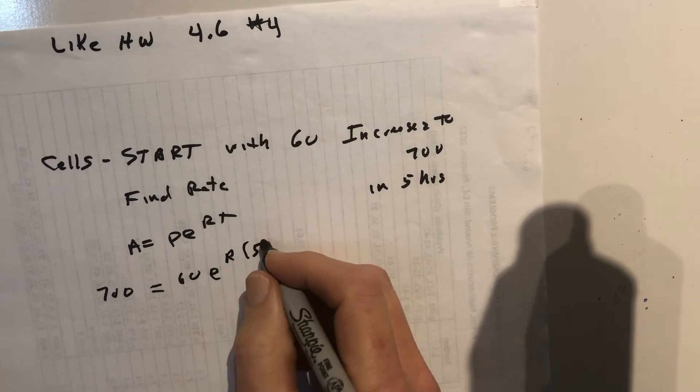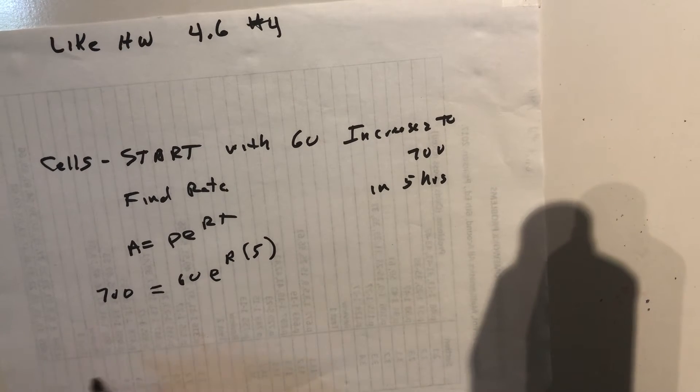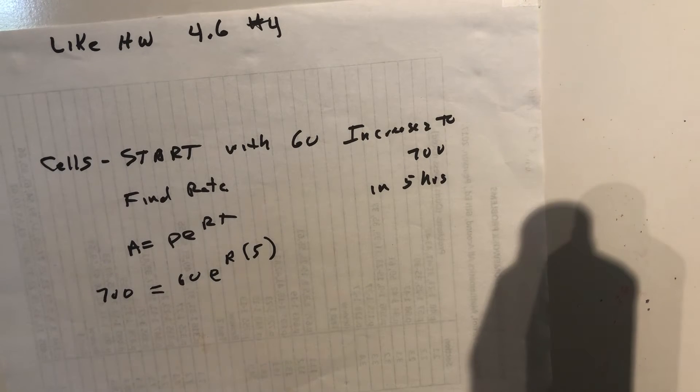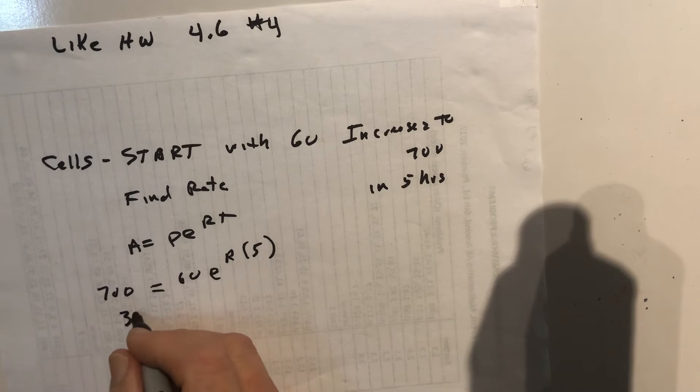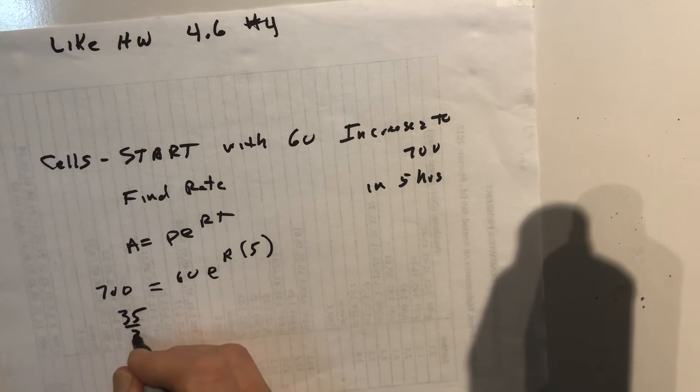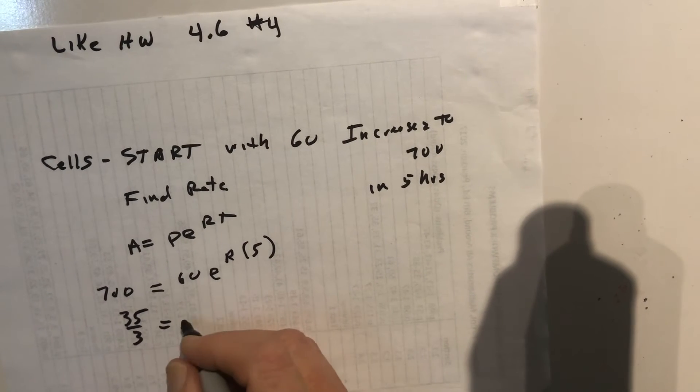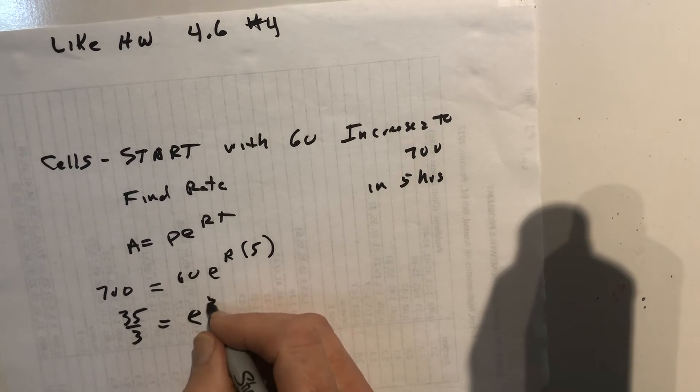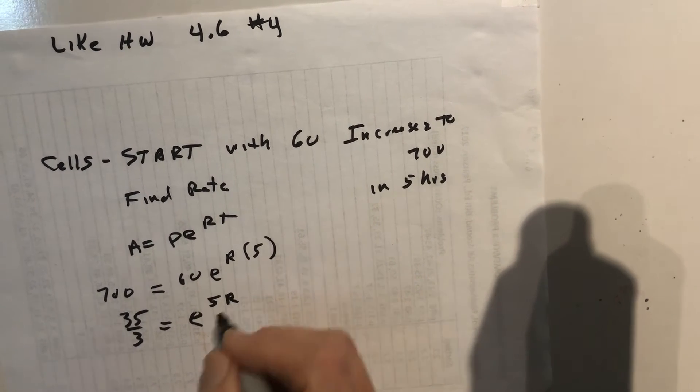You get 35 over 3, and I'll rearrange those - instead of r*5, I'll call it 5r since we're solving for rate. 5 is the time. Now we need to take the log - our base is e.